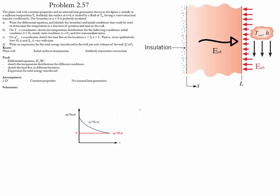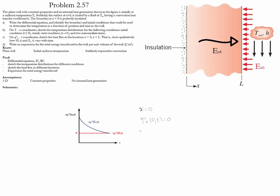The third part of the problem is to sketch the heat flux as a function of time at two different positions: x = 0 and x = L. At x = 0 we have an adiabatic wall, therefore the heat flux at that position is always going to be 0.